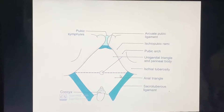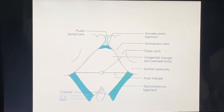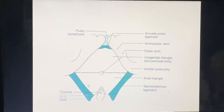The perineum is divided by an imaginary line crossing the ischial tuberosities, dividing this diamond-shaped structure into two triangles.